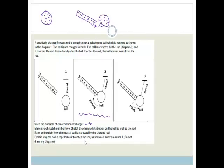Now it says, explain why the ball is repelled as it touches the rod, as shown in sketch number 3. And you do not need to draw in a diagram. Well, what happens is, as they touch, when they touch, as this rod comes into contact with it, the negative charges, because it's always a negative charge, they move, they hop on to the rod. So now what happens is, this thing here has lost some of its negative charge. Therefore, it has become positive. This, even though it's gained a little bit of negative, is still positive. And therefore, they are going to repel.